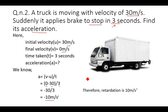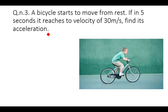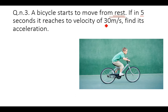Moving to the next question: a bicycle starts to move from rest, so initial velocity is 0. In 5 seconds it reaches a velocity of 30 meters per second, so time taken is 5 seconds and final velocity is 30 m/s. We need to find the acceleration.